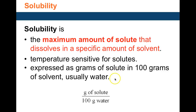Solubility is the maximum amount of solute that can dissolve in a given specific amount of solvent. For example, in 100 grams of water at room temperature, only 39 grams of sodium chloride can dissolve — that is the solubility of sodium chloride. If you heat up the 100 grams of water, a different amount of solute can dissolve, so solubility is definitely dependent on temperature.